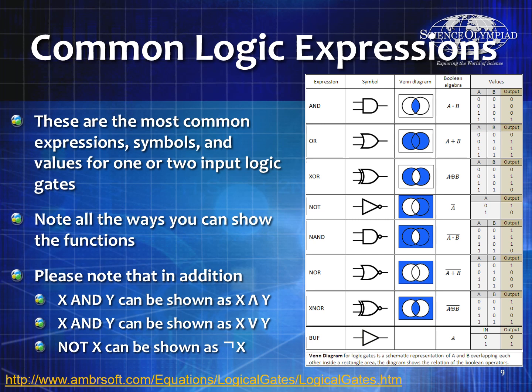Here's another way to show AND, OR, NOT, NAND, NOR, and exclusive NOR gates. They also show a buffer, which is just a pass-through — it's the inverse of the NOT gate. If you have a TRUE coming in, you'll have a TRUE going out; if you have a FALSE going in, you have a FALSE going out. You can also see these gates represented as Venn diagrams and as Boolean algebra.